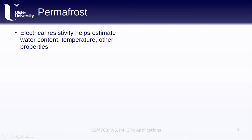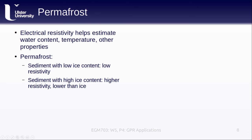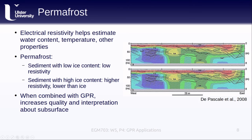Another geophysical method — measuring electrical resistivity — helps us estimate water content, temperature, and other properties of permafrost. With probes inserted into the ground, we induce an electric current and measure the voltage at other locations to determine resistivity. In permafrost, sediment with low ice content tends to have low resistivity, while sediment with higher ice content tends to have higher resistivity, though still lower than pure ice. In the example from a 2008 study by de Pascale and others, overlaying the radargram with the results of a resistivity survey helps clarify the interpretation.